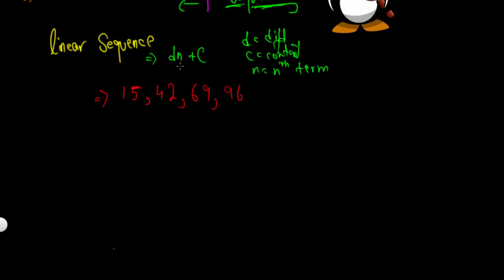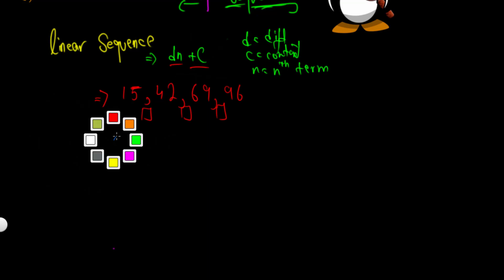For a linear sequence in the form dn + c, the first difference is always constant. For a quadratic sequence, the second difference is constant; for a cubic sequence, the third difference, and so on. For linear sequences, when you subtract consecutive terms from each other you get a constant number.